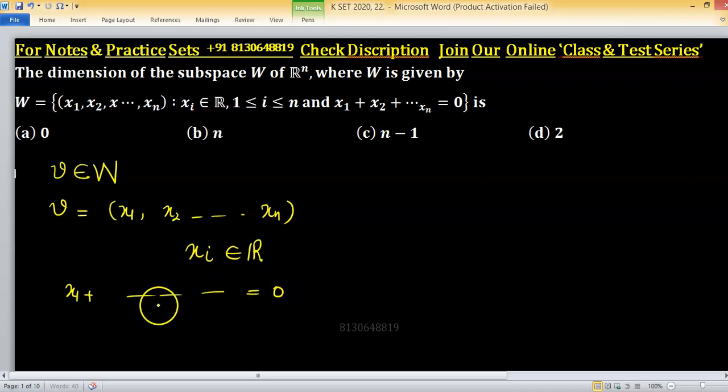So any one constituent or xi can be written as negative of other ones. Particularly if I write x1, then x1 equals to minus of x2 plus x3 and so on xn.